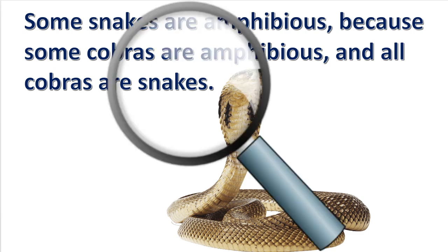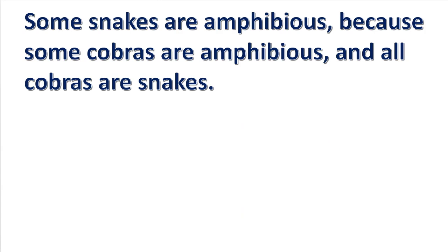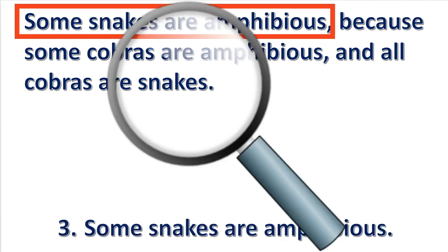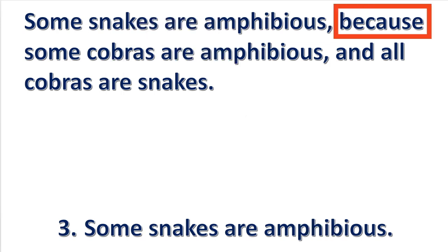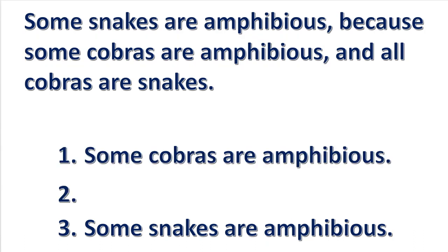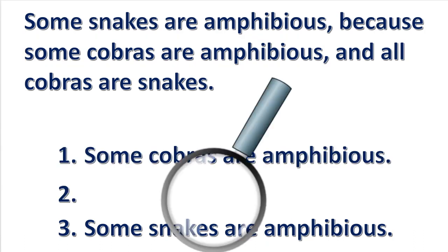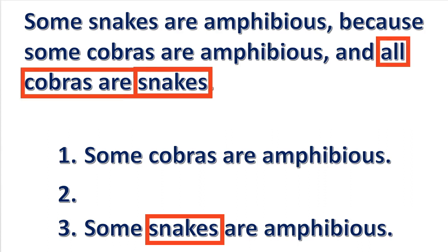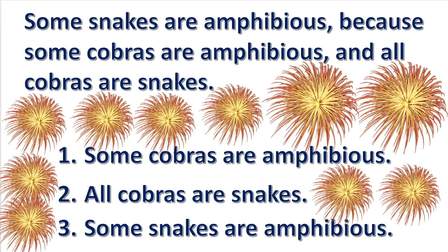Take a look at this syllogism. You will notice that it is not in standard form, because the statements are in the wrong order. To put it into standard form: the first step is to find the conclusion and write it at the bottom — look for indicator words to help you find it. Next, look at the conclusion and find the major term, which is the predicate of the conclusion. Then find the premise that contains the major term — this is the major premise, so write it first. Next, look at the conclusion and find the minor term, which is the subject of the conclusion. The premise that contains the minor term is the minor premise — write it second, below the major premise. Congratulations, the syllogism is now in standard form.